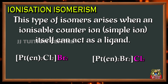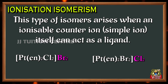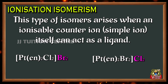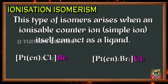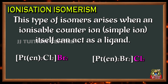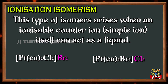Ionization isomers: this type of isomers arise when an ionizable counter ion itself can act as a ligand. The exchange of such counter ions with one or more ligands in the coordination entity will result in ionization isomers. These isomers give different ions in solution. For example, consider a coordination compound where both bromine and chlorine have the ability to act as a ligand, and the exchange of these two ions results in different isomers. In solution, the first compound gives bromine ions while the latter gives chlorine ions, and hence these compounds are called ionization isomers.